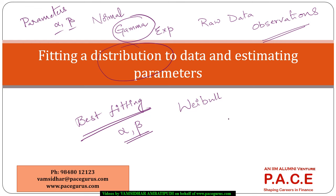Similarly, when I am fitting a normal distribution to the data, how do I really understand what are the parameters of that normal distribution, which are mu and sigma? So depending on the kind of distribution I am trying to fit to the data, I have to estimate the parameters, and based on those parameters I would like to see how good is the fitment of the data to a particular distribution.